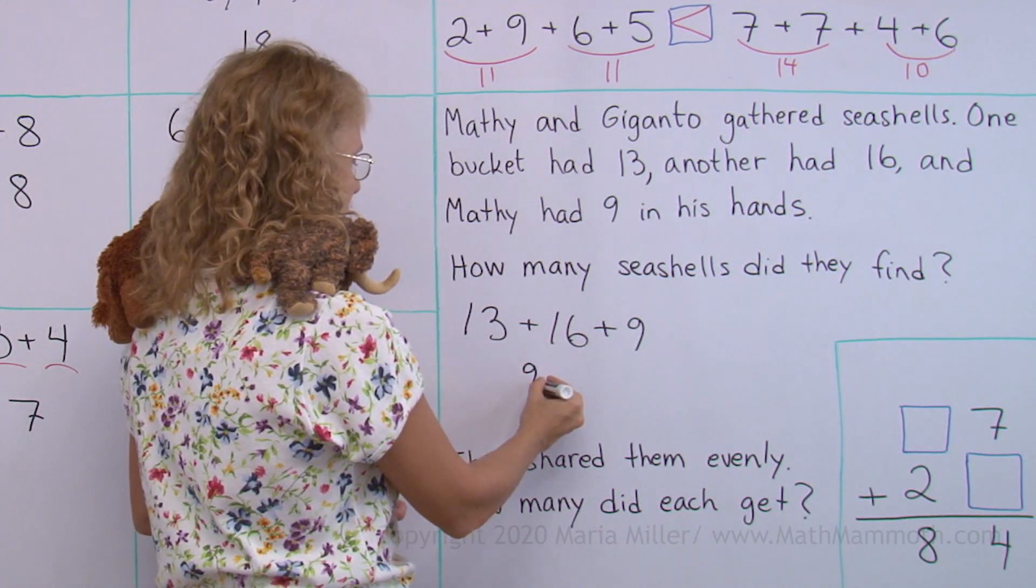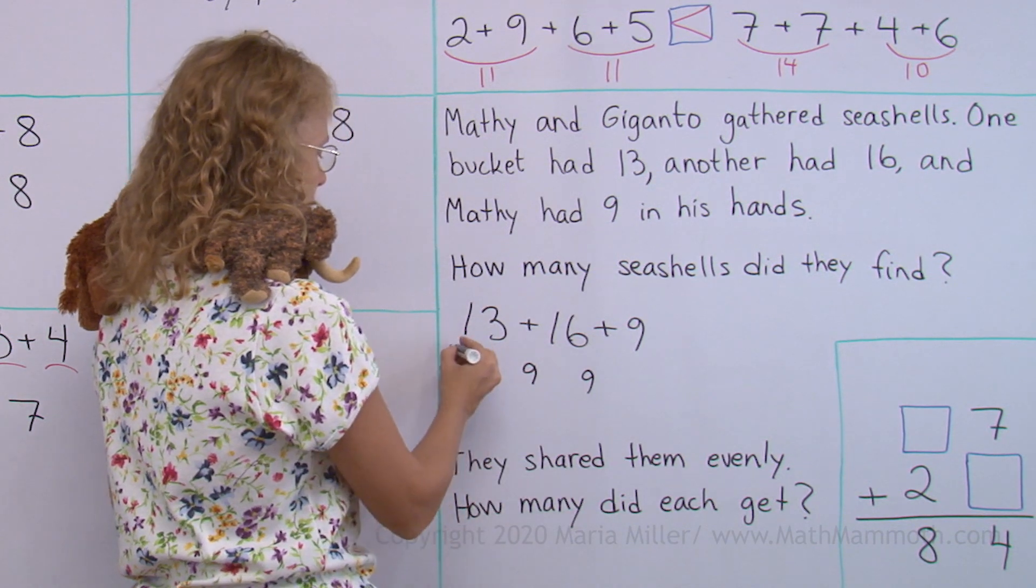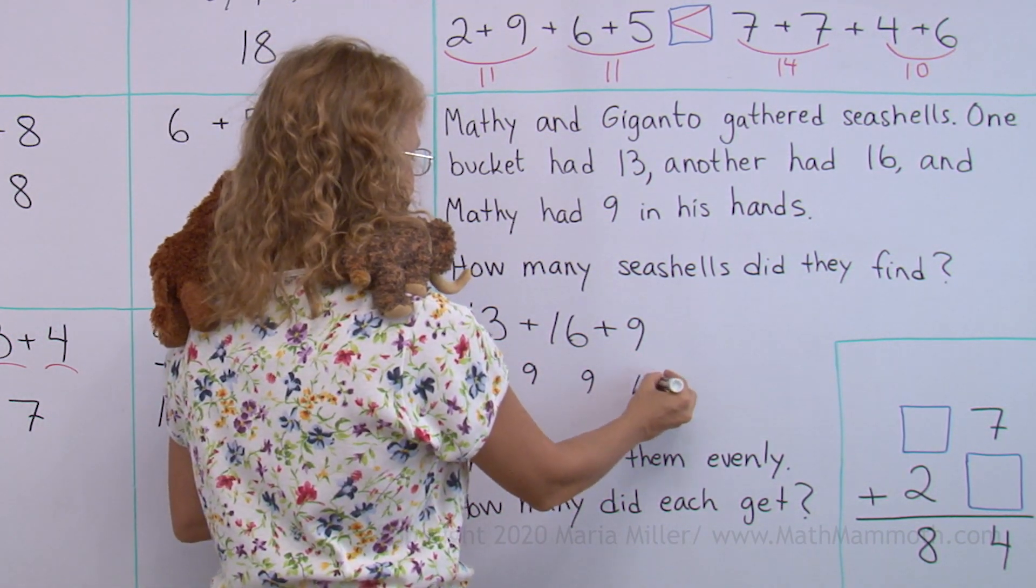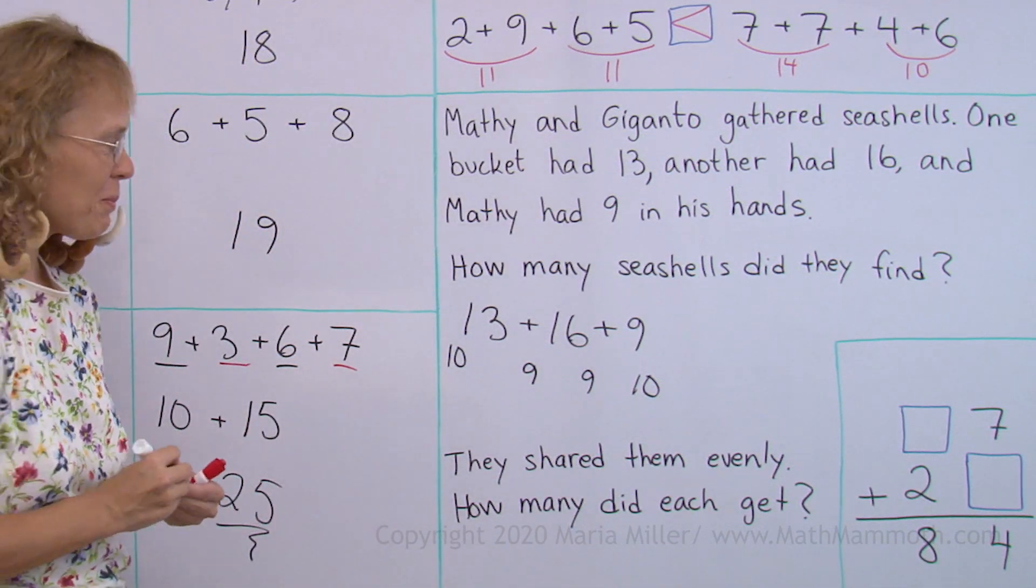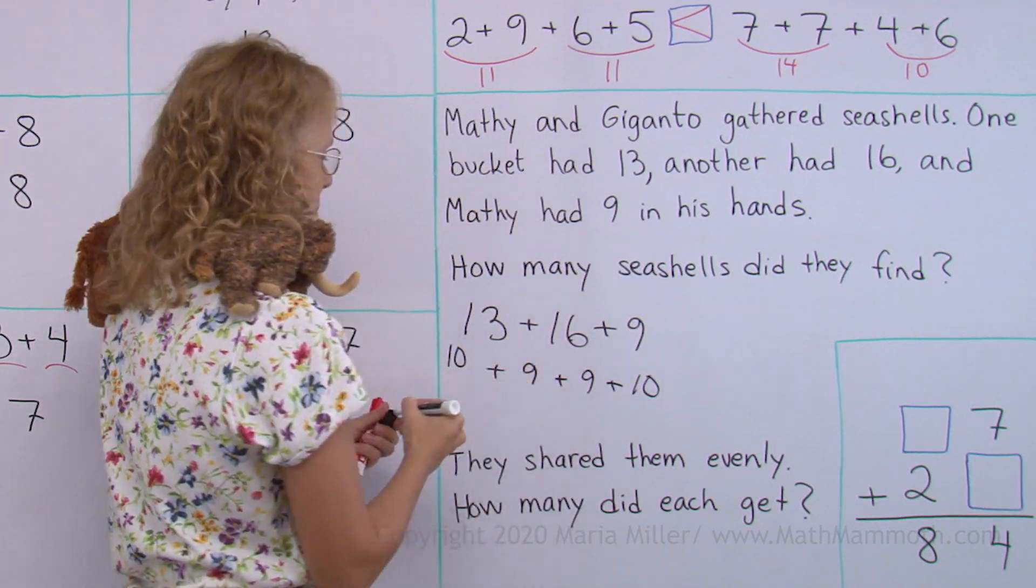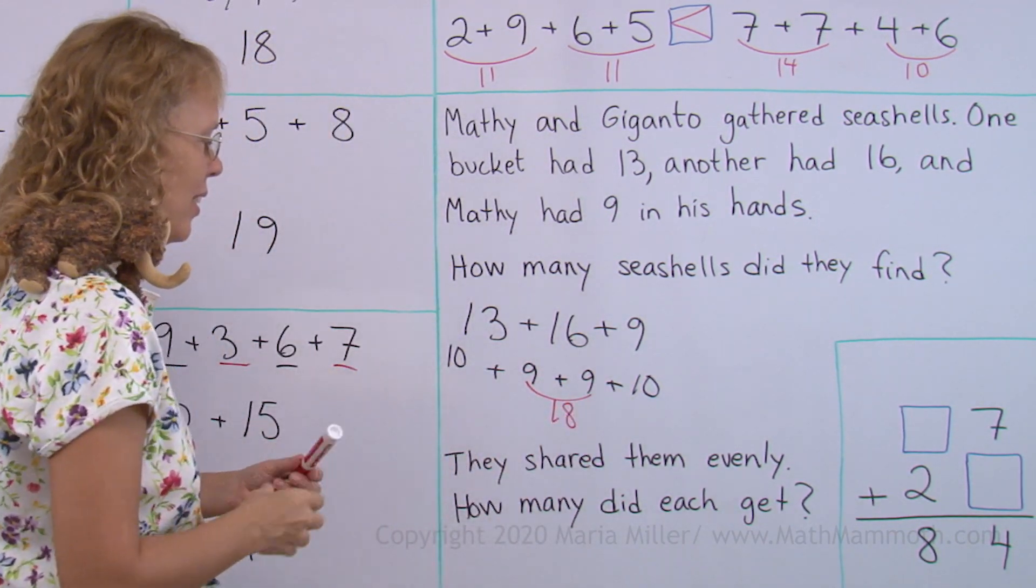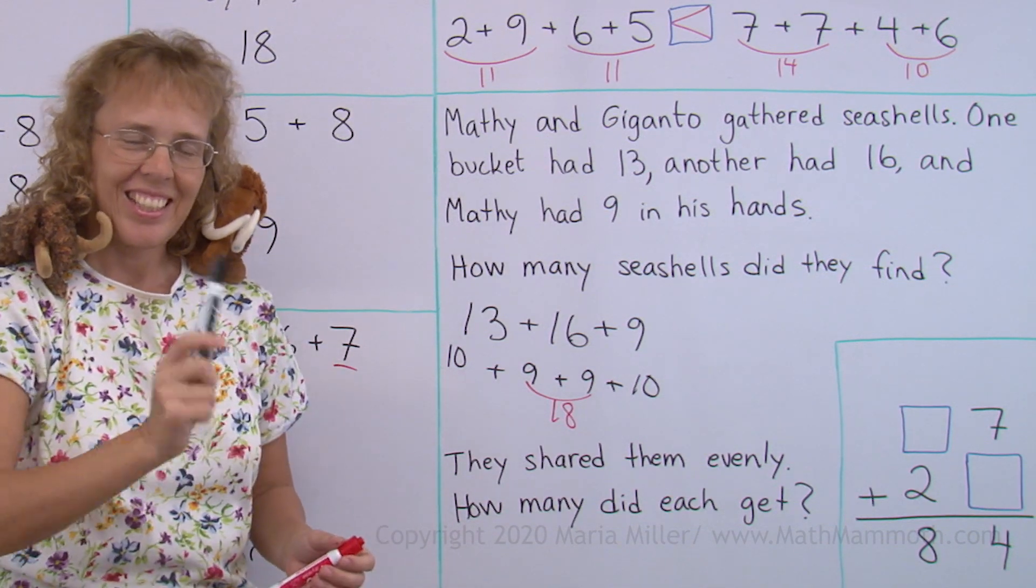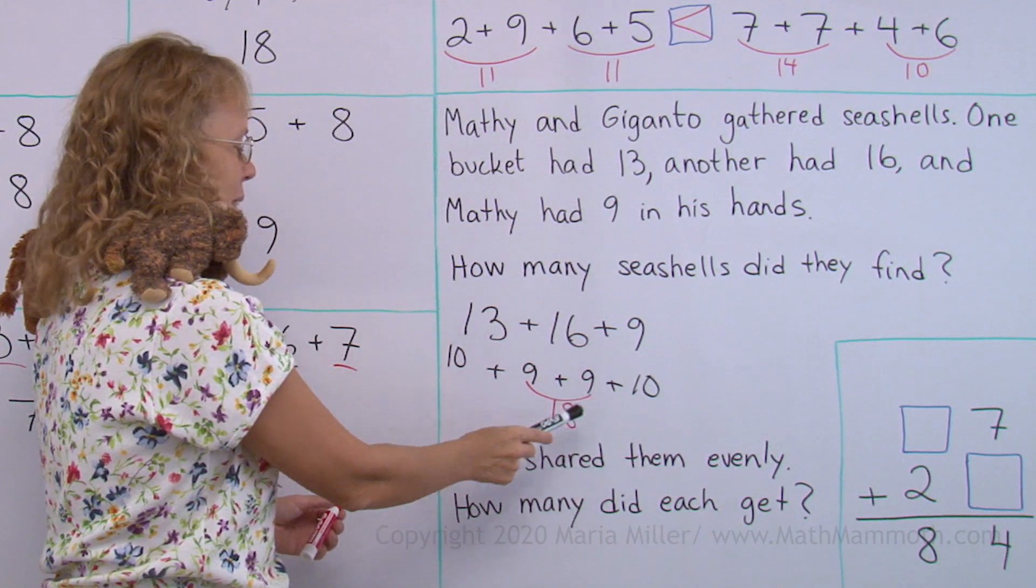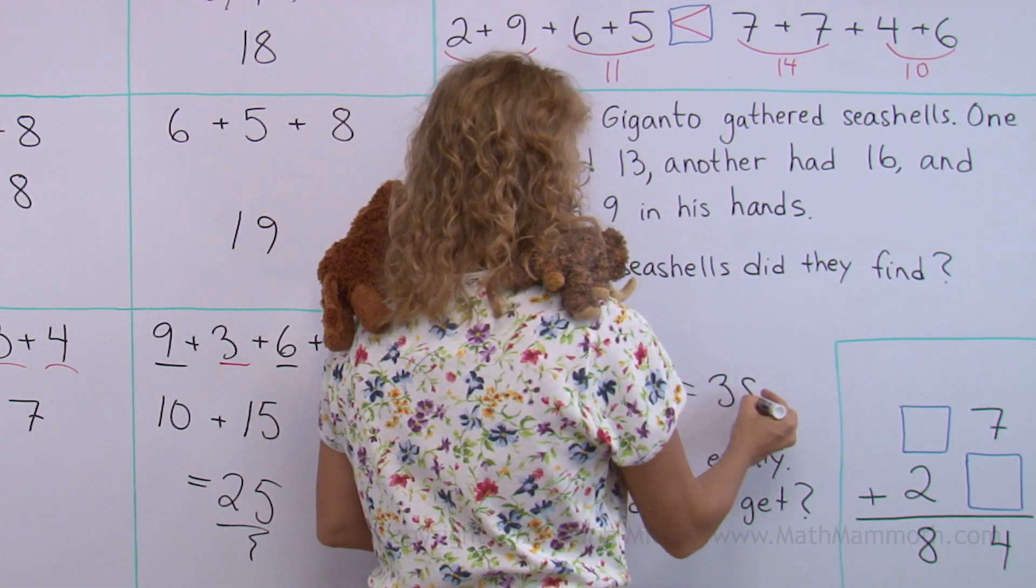Okay, 3 and 6 makes 9. And then there's another 9, right? And then I have the 10 from 13 and another 10 from 16. And then we are adding these. 9 and 9 makes 18. And so 10 and 10 and 18. Can you do that? 10 plus 10 plus 10 plus 8 would be 38. Right?